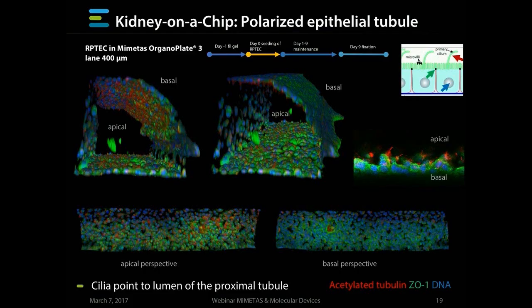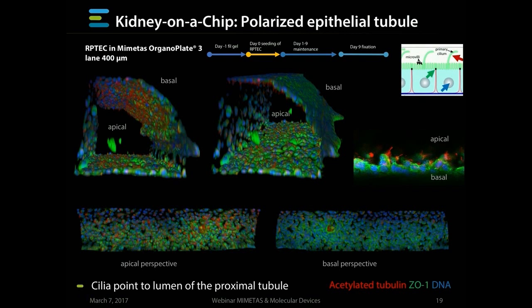These cells, when stained with a variety of markers, show acetylated tubulin in red staining the cilia — and the cilia are only on the inside of the tubule and not on the outside. ZO-1, a stain for tight junctions, is also only on the apical side of the cells and not on the basal side. A blow-up nicely shows the cilia in red and ZO-1 primarily at the apical side of the cells. These cells are fully polarized, which means that transport going through the cells is also directional.